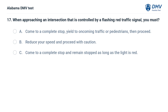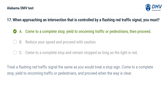When approaching an intersection controlled by a flashing red traffic signal, you must: A. Come to a complete stop, yield to oncoming traffic or pedestrians, then proceed. B. Reduce your speed and proceed with caution. C. Come to a complete stop and remain stopped as long as the light is red. Correct answer: A. Treat a flashing red traffic signal the same as a stop sign — come to a complete stop, yield to oncoming traffic or pedestrians, and proceed when the way is clear.